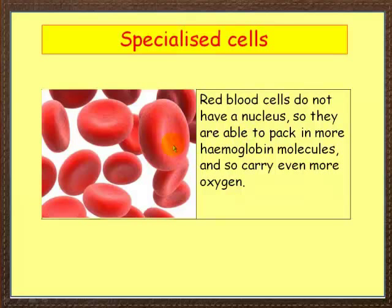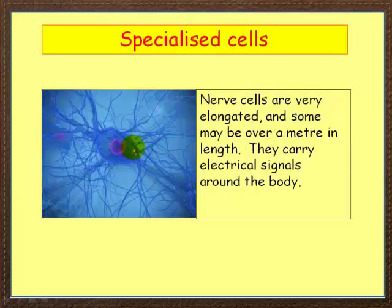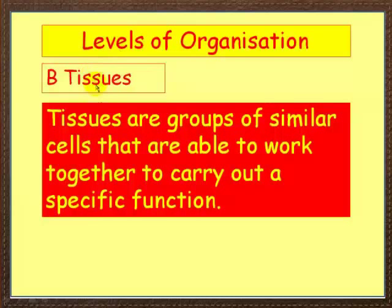Here we've got nerve cells, which are very specialized cells. They're very elongated — some may be over a meter in length, for example from your big toe to your spinal cord. They carry electrical signals all around the body. The next step up in terms of organization from the cell is tissues. Tissues are groups of similar cells that work together to carry out a specific function.